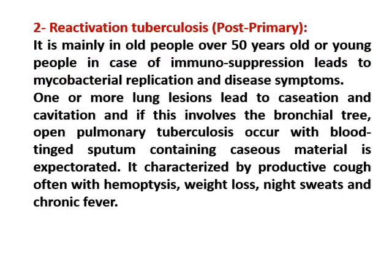The second form is reactivation tuberculosis, or post-primary. It occurs mainly in old age (over 50 years) or in young people with immune suppression, leading to mycobacterial replication and disease symptoms. In this condition, one or more lung lesions lead to caseation and cavitation. If this involves the bronchial tree, open pulmonary tuberculosis occurs, with blood-tinged sputum containing caseous material being expectorated — hemoptysis — along with weight loss, night sweats, and chronic fever.